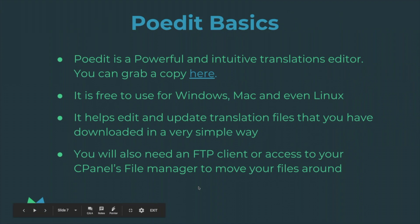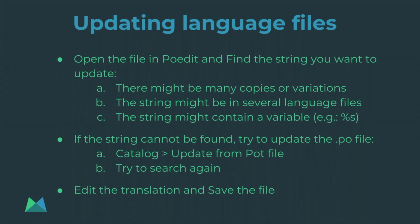To edit these language files, we're going to use a free software called PO Edit. It is free and there is a premium version available, but for our purposes the free version works great. It's available for Windows, Mac, and Linux. You will also need an FTP client or some type of access to your cPanel file manager to be able to move files around. What you're going to do is open the file in PO Edit, find the strings you want to update — and there might be several copies of that string, potentially across multiple plugin language files.